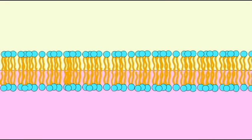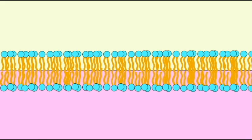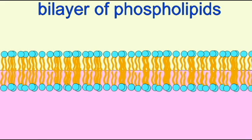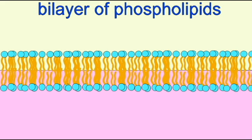One set of phospholipids have their polar heads facing the watery exterior of the cell, and the other set have their polar heads facing the watery interior of the cell.